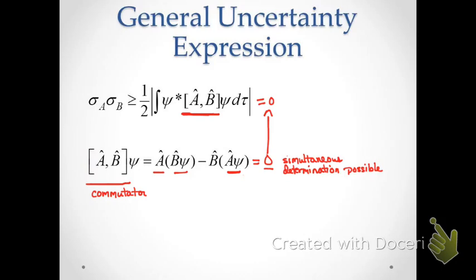When operators commute, the uncertainty relationship between the two observables A and B is equal to zero, which simply means we can know both exactly at the same time. So if the commutator equals zero, the operators commute, and there are no limitations on what we can know about those two properties simultaneously.